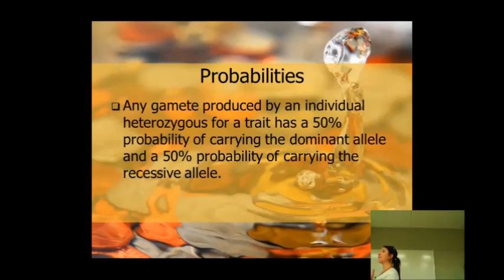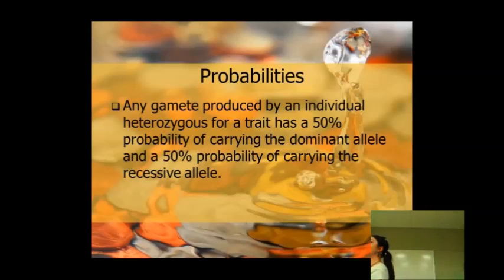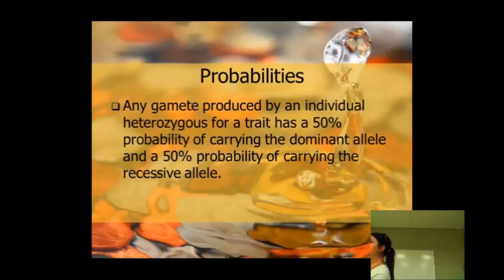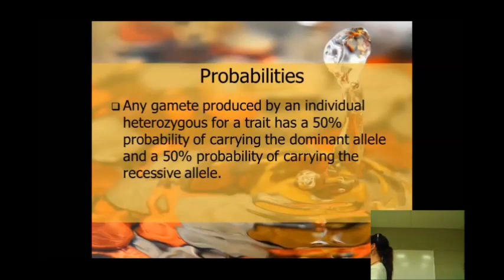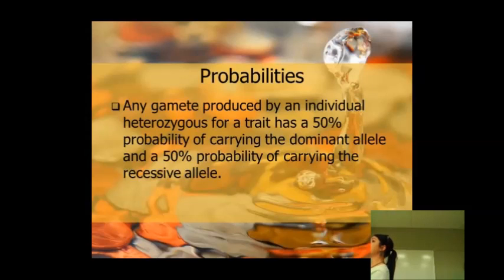So if you have a parent that is big A, little a, then there's a 50% chance that the egg is going to have a big A, 50% chance that the egg is going to have a little a, and 50% chance that the sperm is going to have a big A.